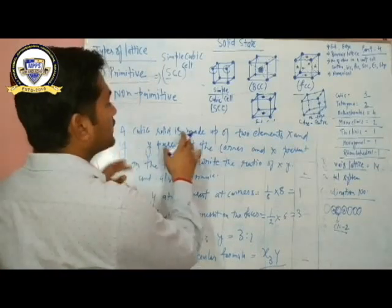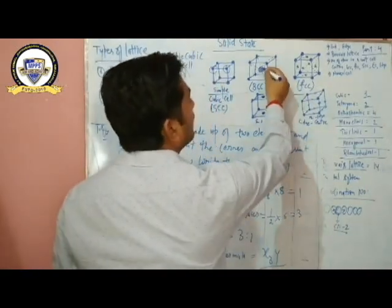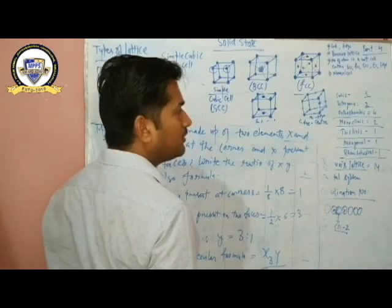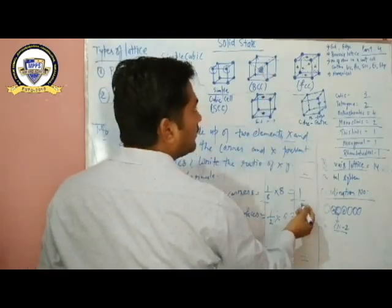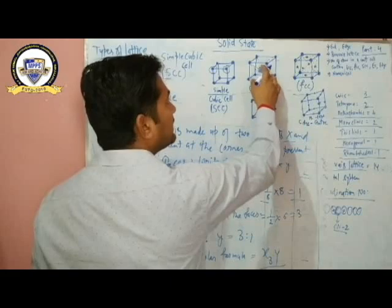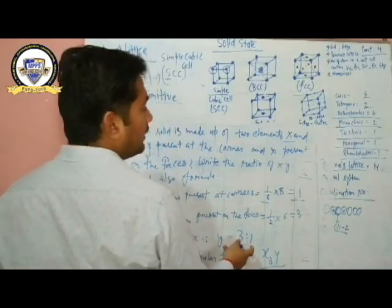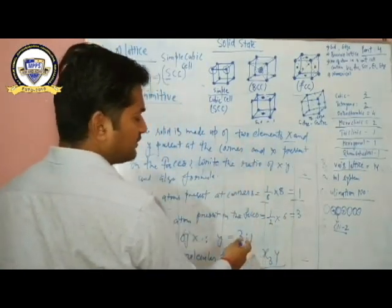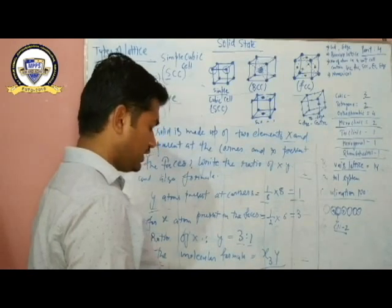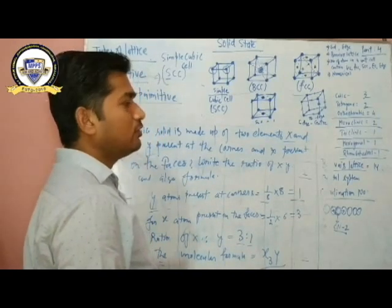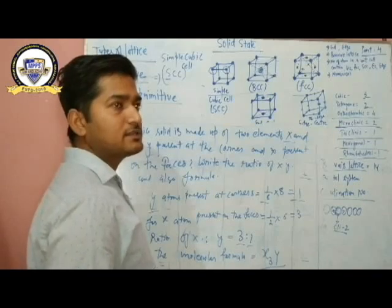You can change the question: if X is present at the body center and Y at the corners, then Y = 1 and X = 1 (body center contributes 1), giving formula XY with ratio 1:1. But if X is present at the faces, the ratio becomes 3:1 and the formula is X₃Y. In the next topic we will discuss the arrangement or packing efficiency of crystal lattice. Thank you.